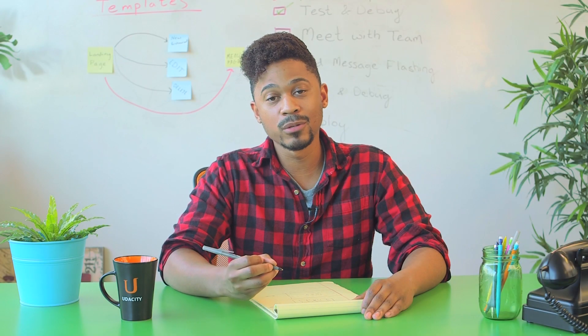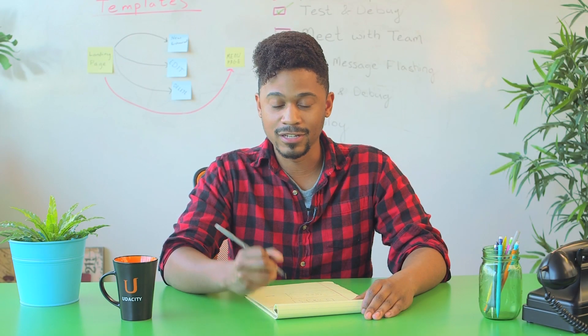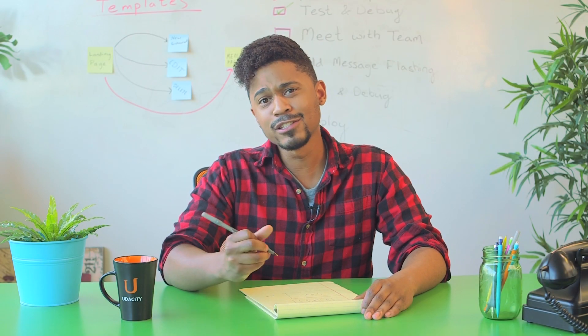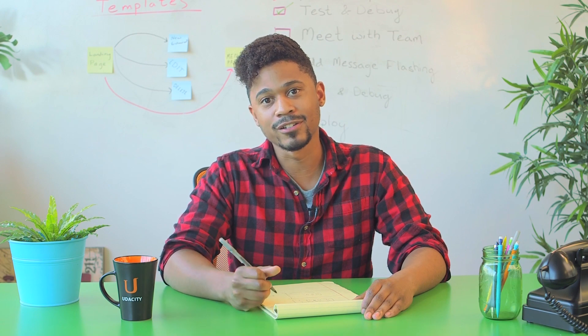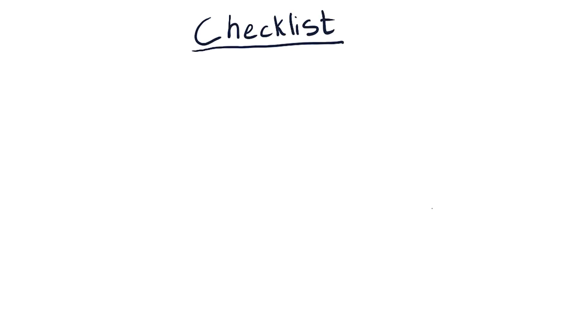The first step to having an awesome web application is having an awesome game plan. Let's define what our prototypes should do after completing each iteration. Let's do some brainstorming to make a checklist of deliverables that we want to achieve with each iteration of development, by breaking down the project into smaller, easier to manage mini projects.